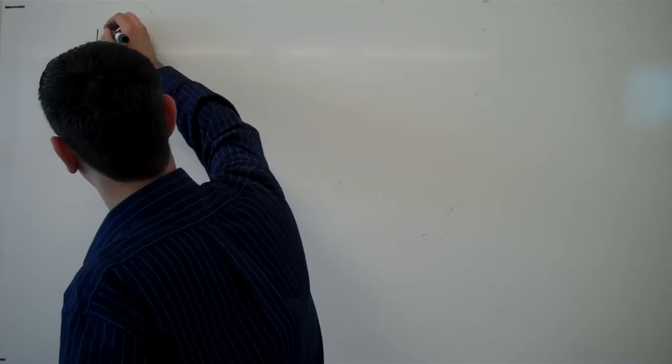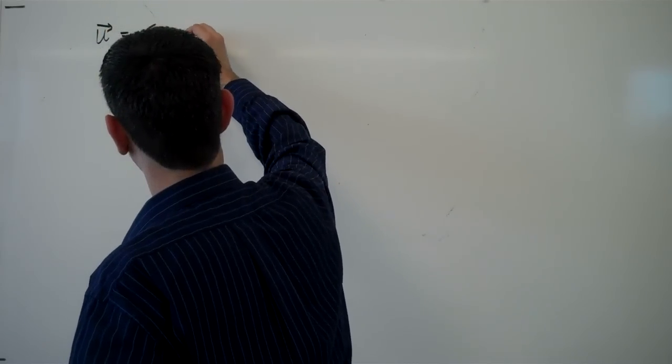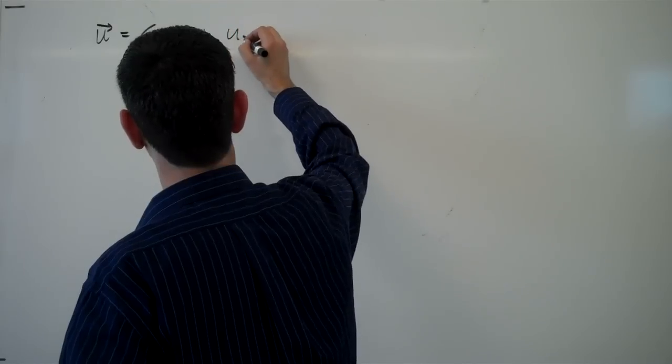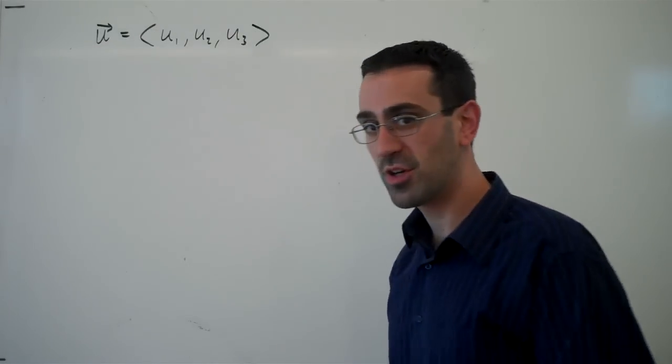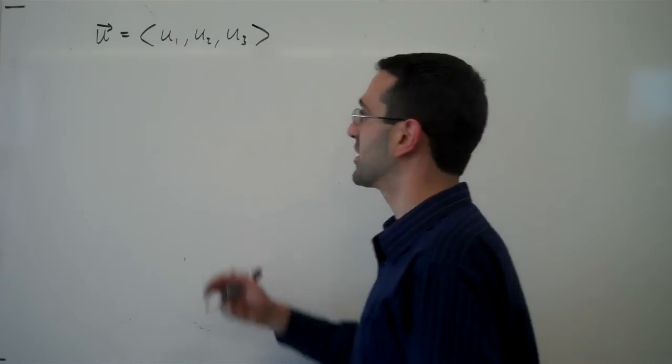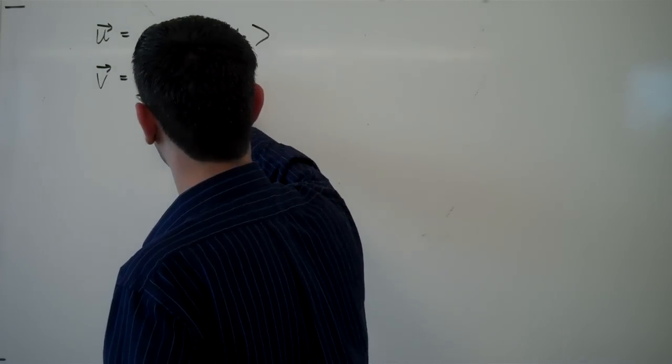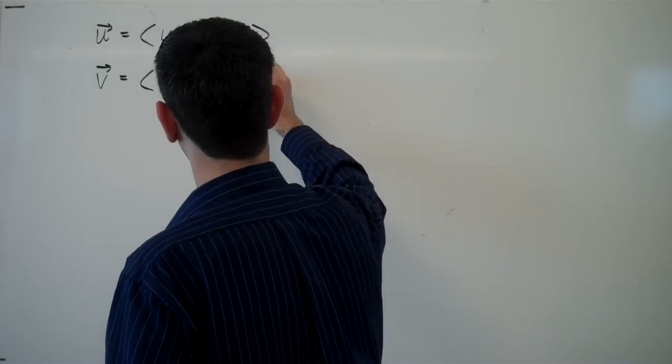So if we have vector u with components u1, u2, u3, and we could have more components than that if we wanted to go into higher dimensional space, but we'll stick with three dimensions for now. And if we had vector v with components v1, v2, v3,